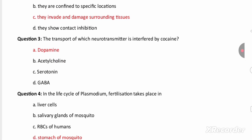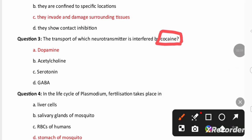The transport of which neurotransmitter interferes? Cocaine. This also from human health and disease chapter. Cocaine is one narcotic drug. It is going to stop the transport of neurotransmitter and the neurotransmitter is dopamine.